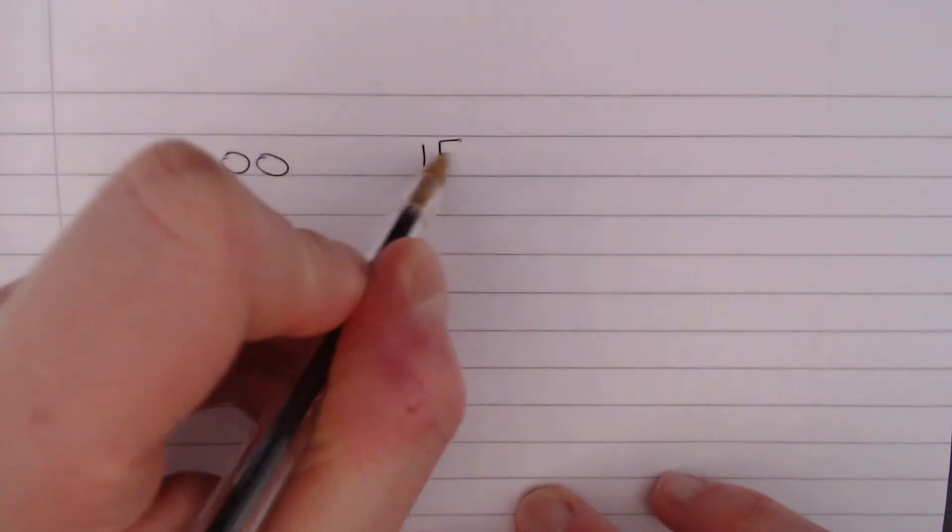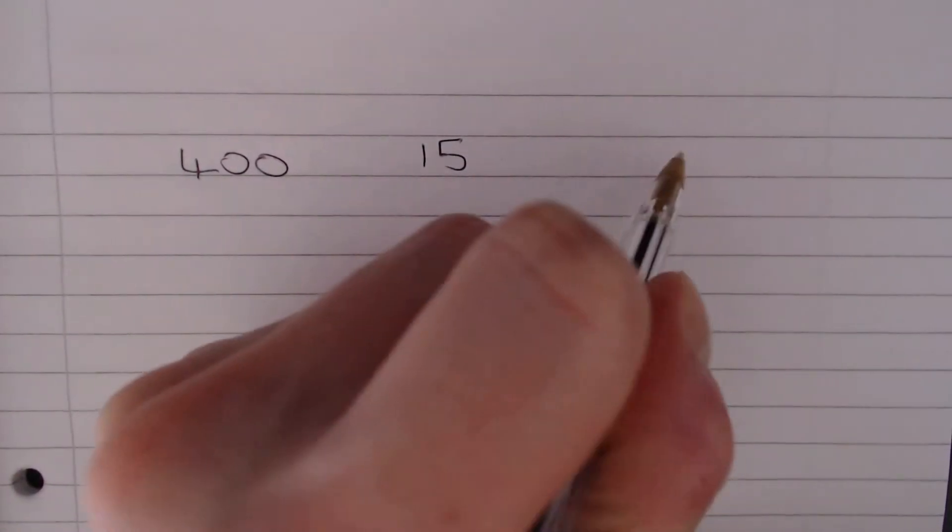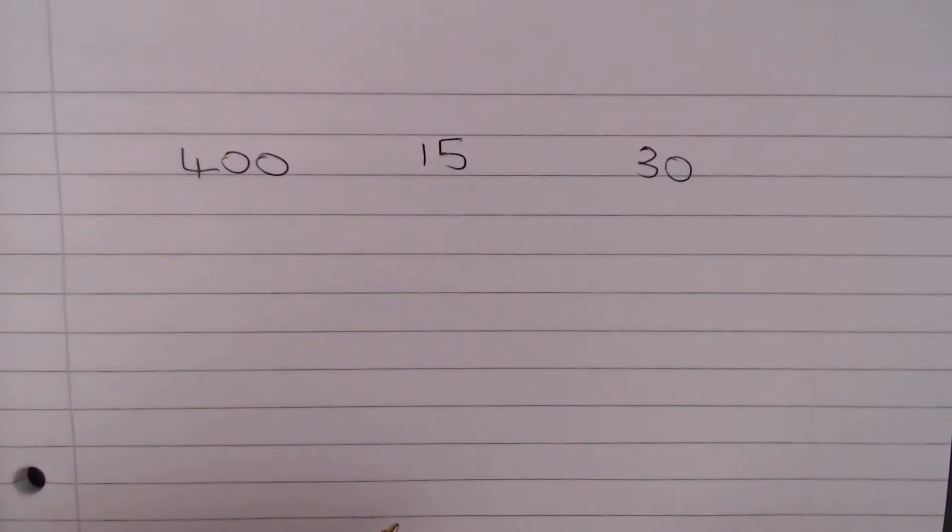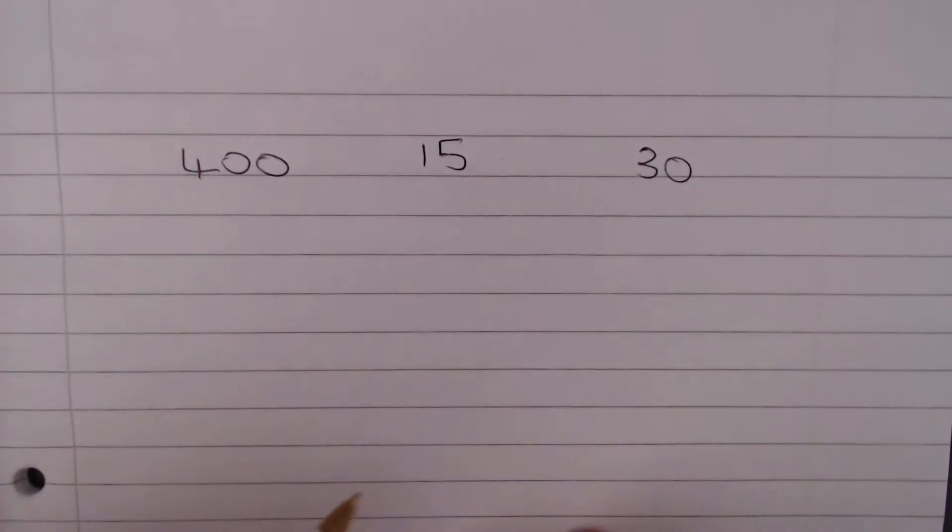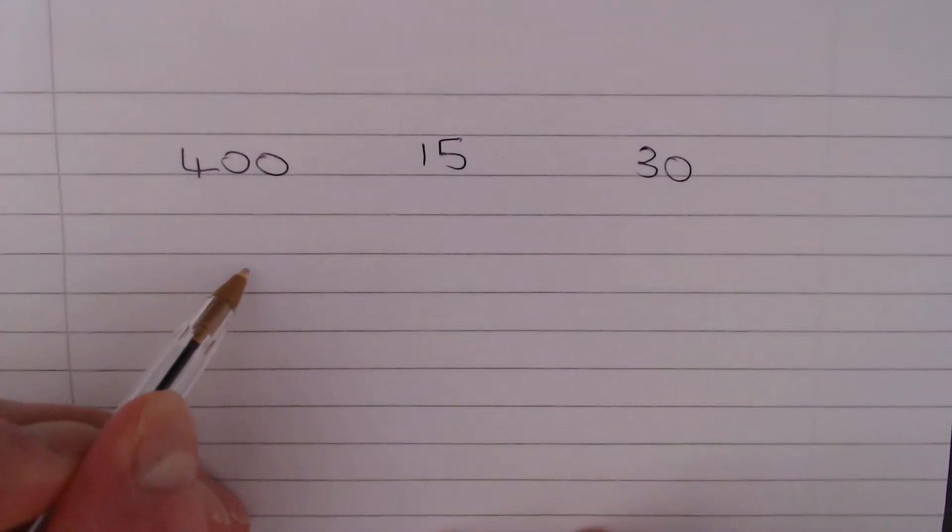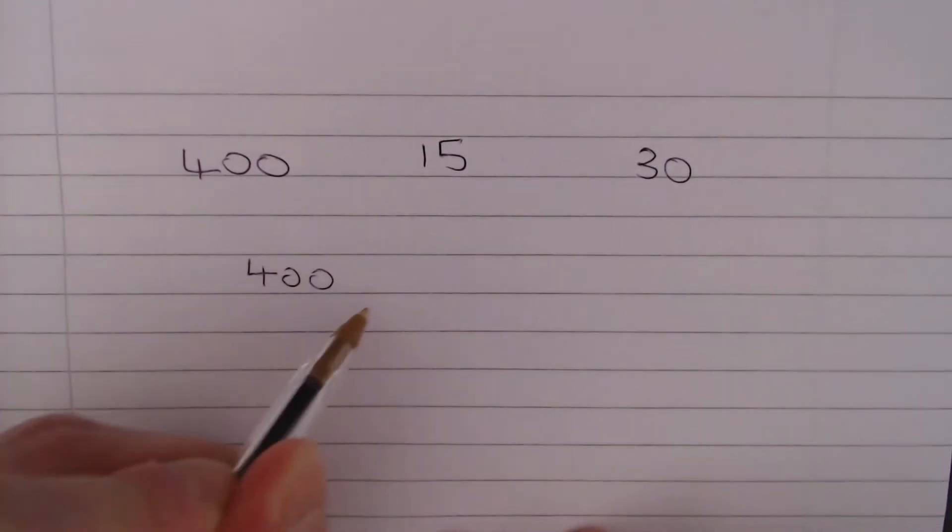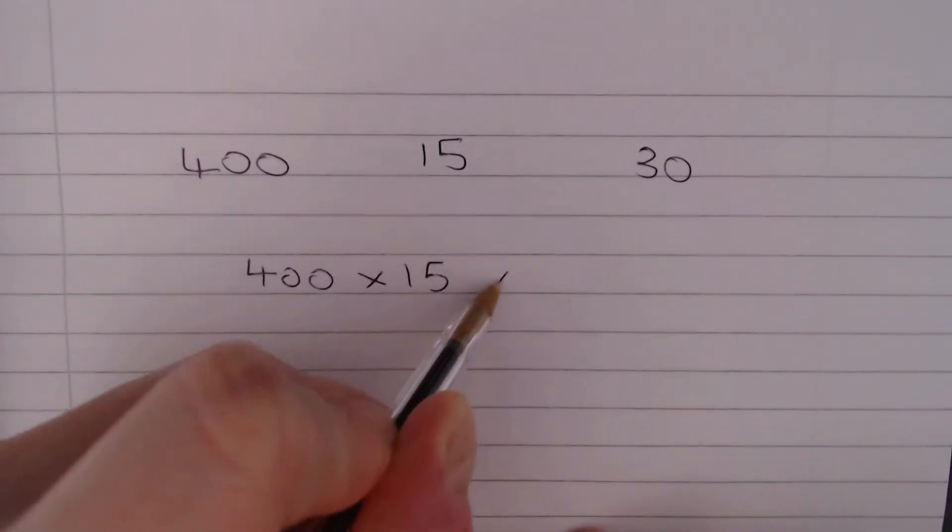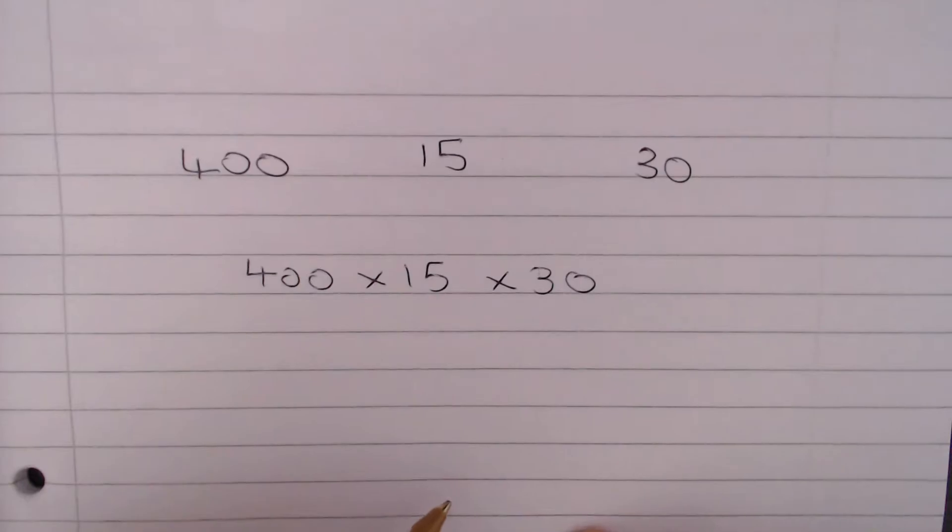Okay, so we've got 400 employees, they each travel 15 miles and they get paid 30 pence per mile. So, we're going to do a simple multiplication. We've got 400 multiplied by 15 multiplied by 30.